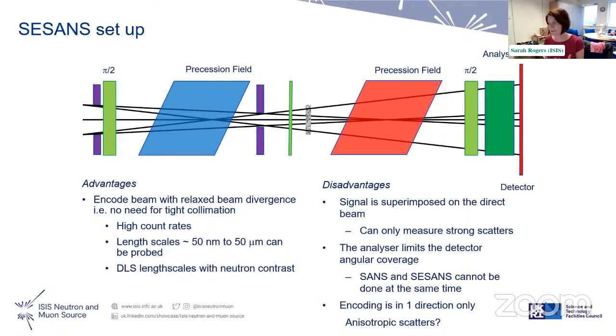It has high count rates and it can probe really big length scales — sort of 50 nanometers up to the micron length scale. So it's basically like dynamic light scattering length scales, but with neutron contrast.